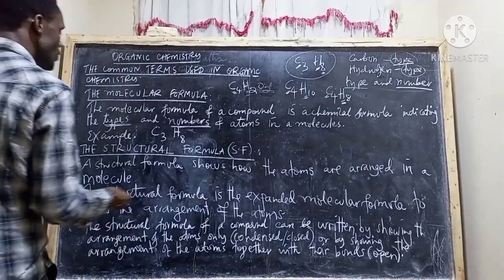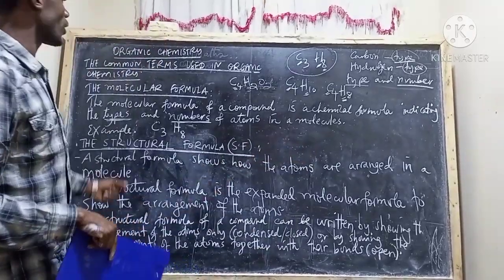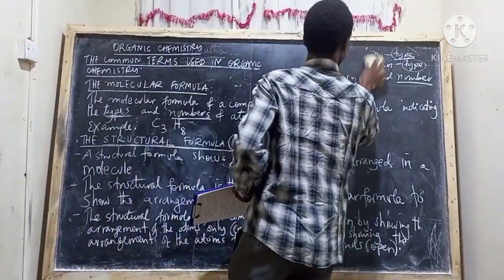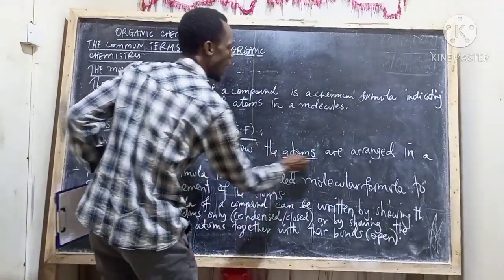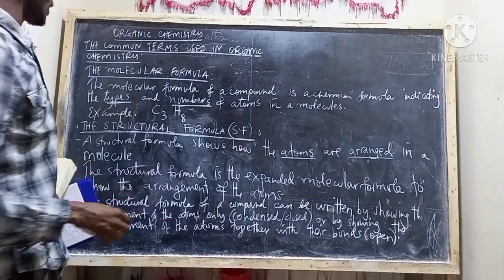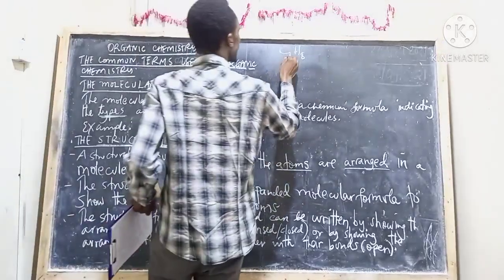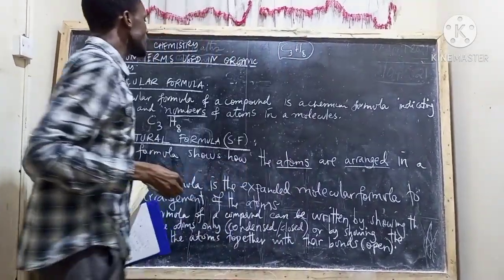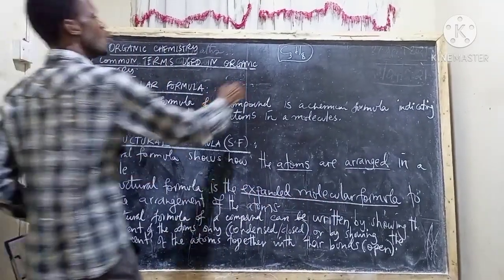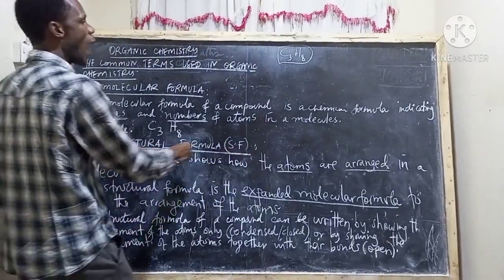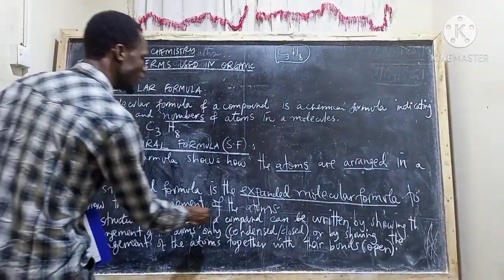The other term we have is called the structural formula. The structural formula shows how the atoms are arranged in a molecule. For example, we have seen C3H8. If we want to know the arrangement of these atoms in the molecule, that is what the structural formula tells us. The structural formula is the expanded molecular formula showing the arrangement of the atoms.